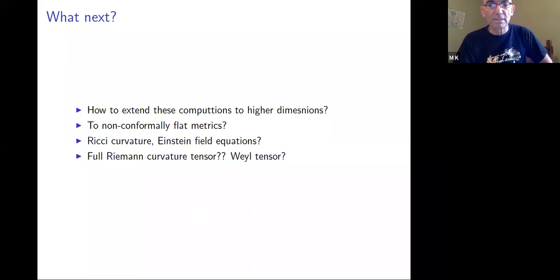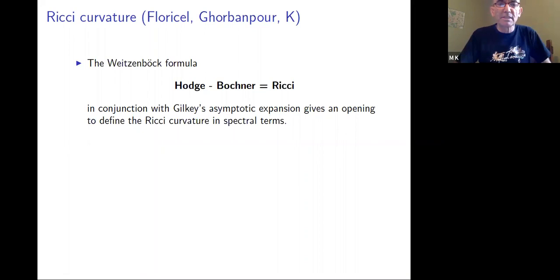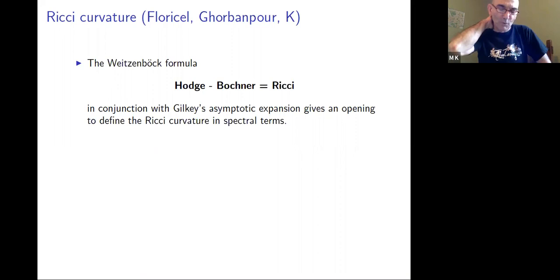Just briefly: how we tackled Ricci curvature. This is work I did with Oscar and Remus Floricel. The help comes through the Weitzenböck formula. The Weitzenböck formula can be written as: Hodge − Bochner = Ricci — a nice way of writing it.